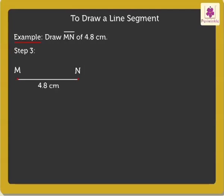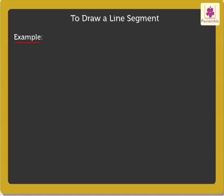Now, let us solve another example. Draw a segment AB of 7.7 centimeters. Segment AB of 7.7 is drawn like this.